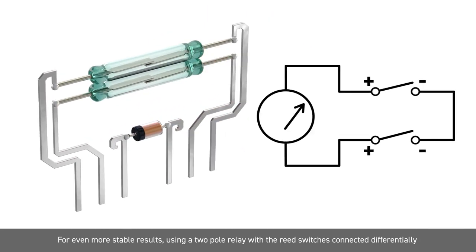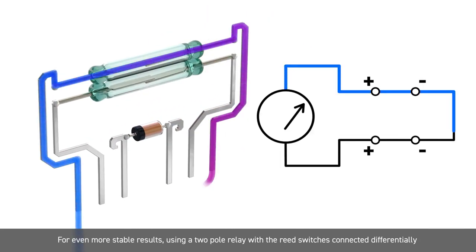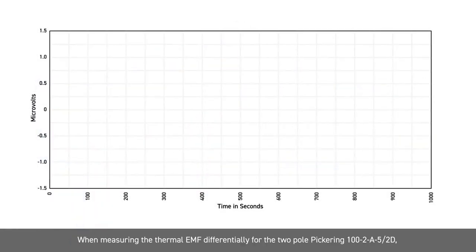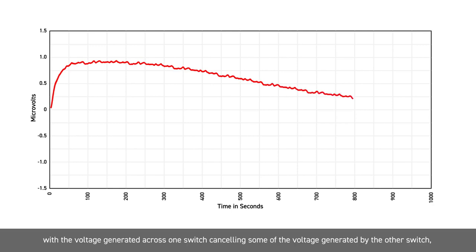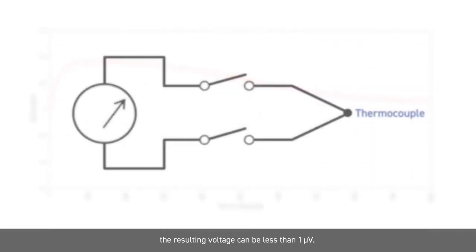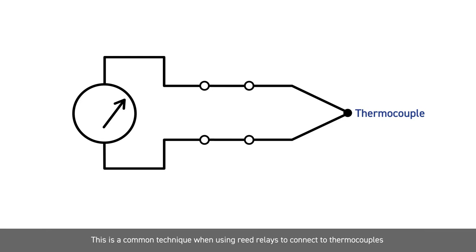For even more stable results, using a 2-pole relay with the Reed switches connected differentially can mean the voltage generated in one switch is in the opposite polarity to that generated in the other switch. The resulting thermal EMF will be the difference between the voltages. When measuring the thermal EMF differentially for the 2-pole Pickering 100-2-A-5-2D, with the voltage generated across one switch cancelling some of the voltage generated by the other switch, the resulting voltage can be less than 1 microvolt.